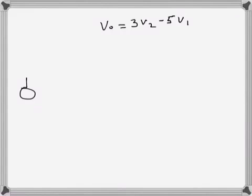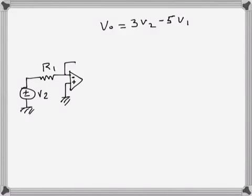Here's V2 with resistance R1 going to the inverting input, and the non-inverting input going to ground. This is an inverting amplifier with 3R1, so with V2 as input, I'm getting the output as minus 3V2.